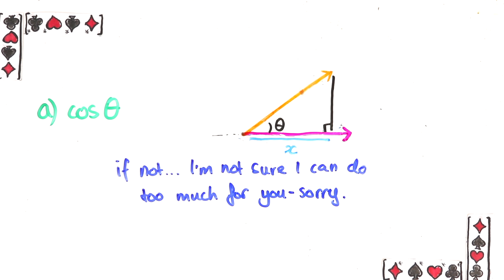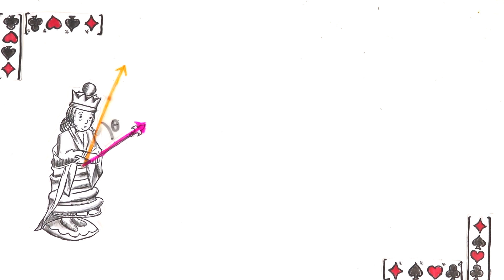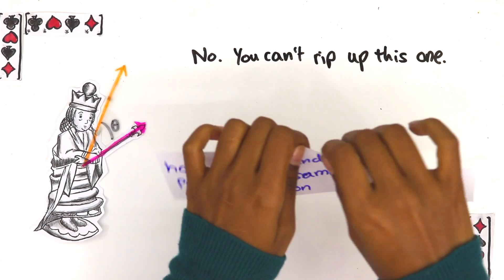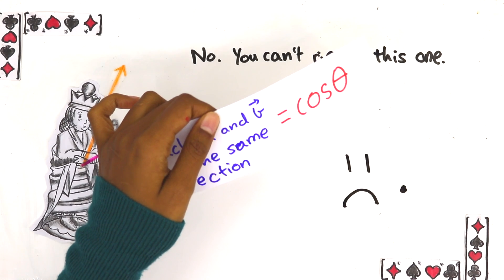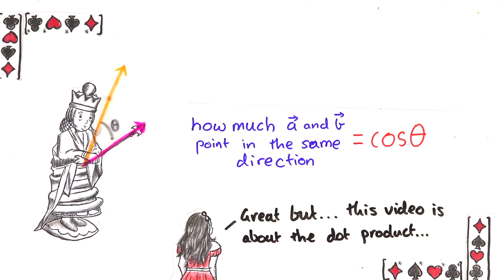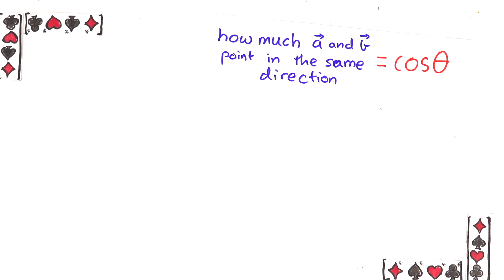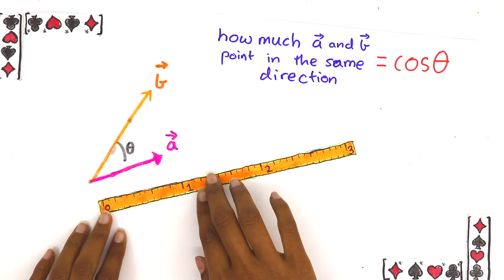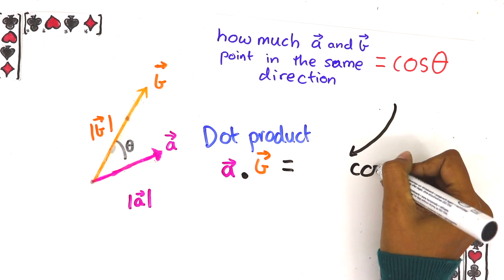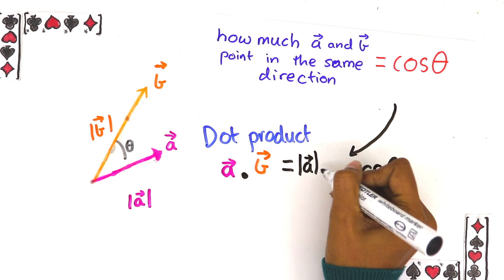So we have a nice answer to the question how much do a and b point in the same direction and even a nice formula for the answer cos theta of the angle between them. But how does this relate to the dot product? The dot product is a function that takes any two vectors a and b of these lengths and gives you the amount that they're in the same direction cos theta times their lengths.